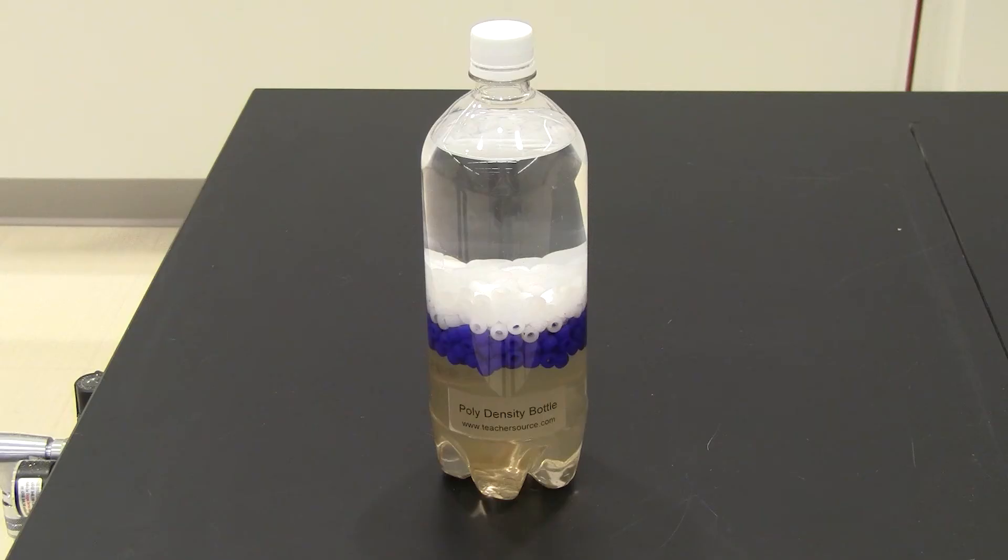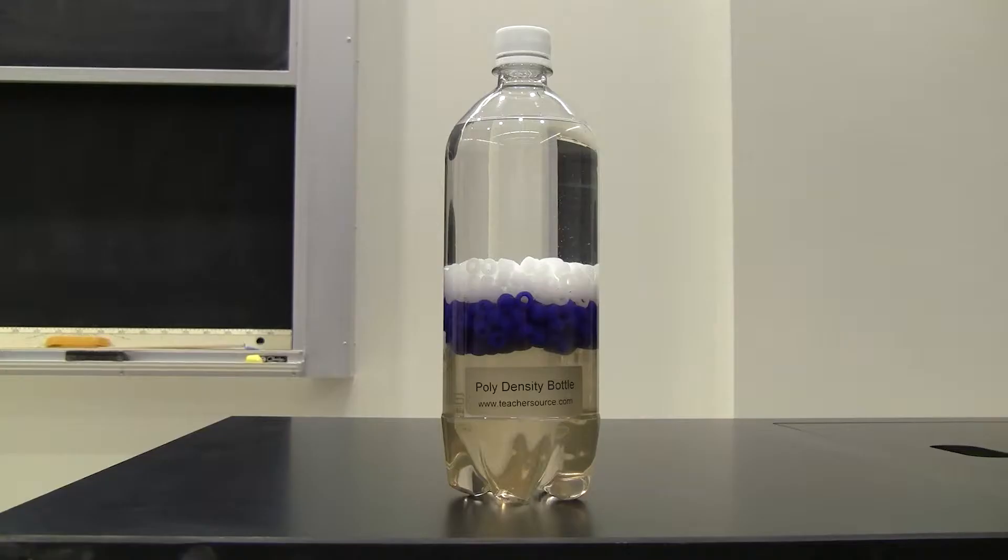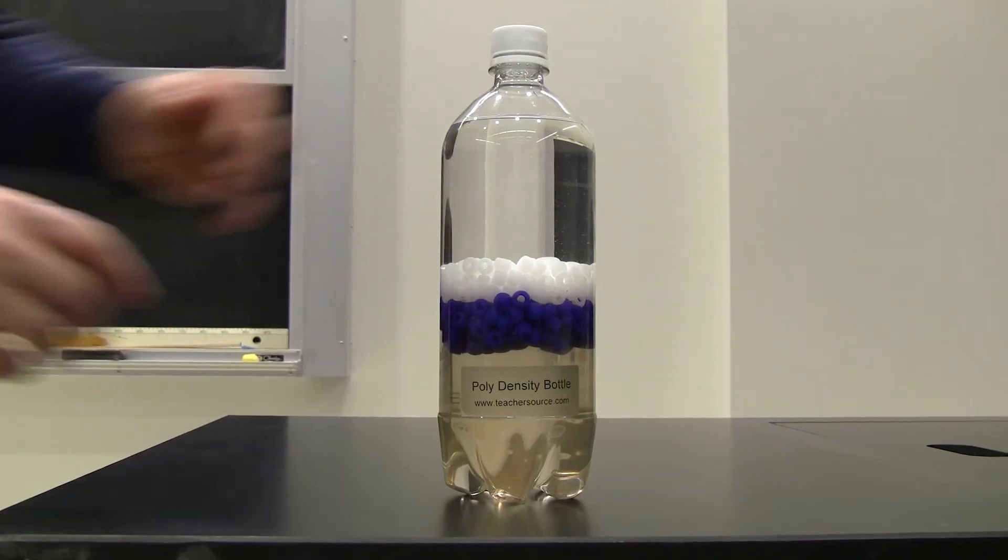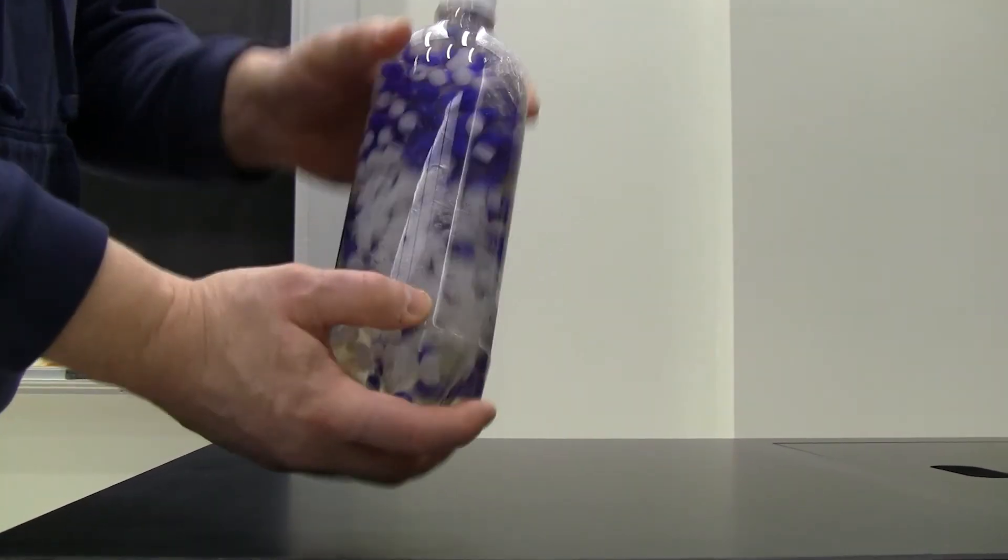A good demonstration for showing differentiation is the poly density bottle, available from Educational Innovations. There are two different types of beads with different colors and different densities immersed in a fluid. We begin our demonstration by shaking up the bottle and completely intermixing the beads and fluid.